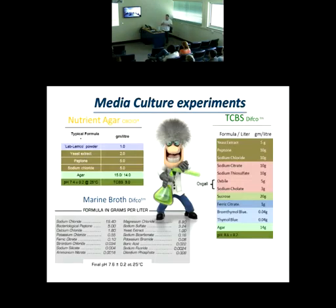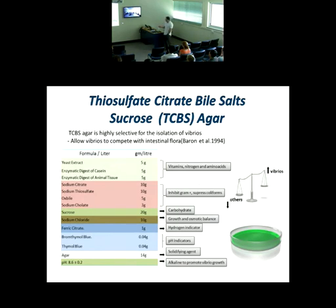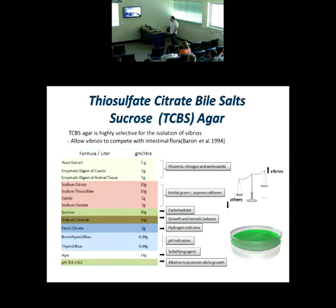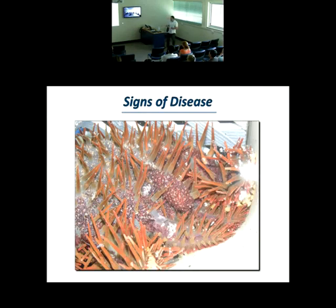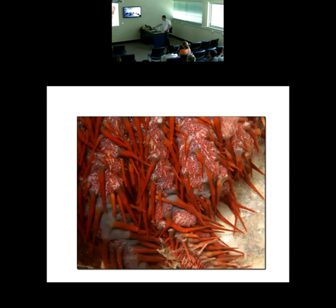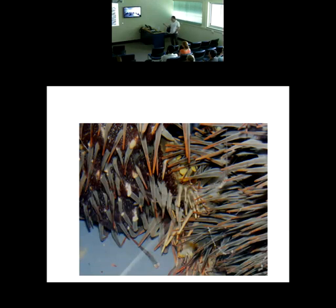These chemicals are used to inhibit coliforms and promote the growth of Vibrios — that's why it's called a selective media culture. They inhibit gram-positive bacteria and suppress coliforms, and that could be the reason for inducing disease in the Crown of Thorns starfish. The signs of disease are loss of skin tension — you see blisters — then drop of spines.